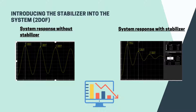For the introduction of the stabilizer: on the left-hand side is the system response without stabilizer, and on the right-hand side is the system response with stabilizer. As we can see, after adding the stabilizer to the system, the graph immediately converges closer to zero compared to the system without stabilizer.